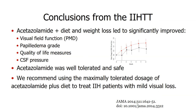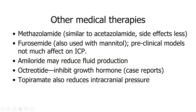If acetazolamide is not tolerated, alternatives include methazolamide (a cousin drug, slightly less effective), furosemide, amiloride, octreotide, and topiramate, which also reduces intracranial pressure through carbonic anhydrase inhibition. I often combine topiramate and acetazolamide together to achieve the best reduction in intracranial pressure and the best headache outcome.